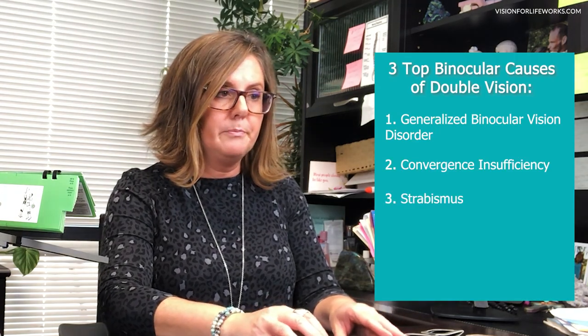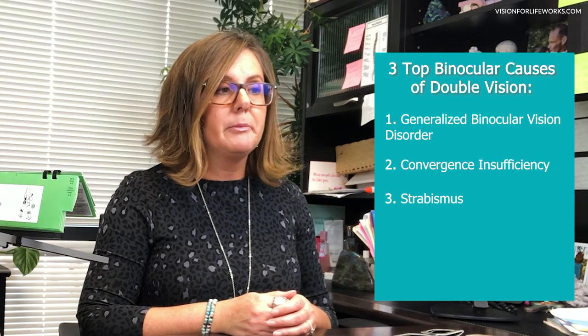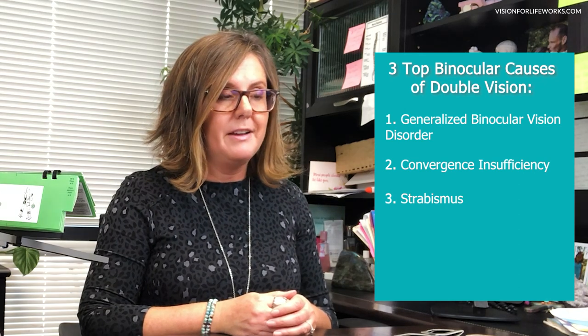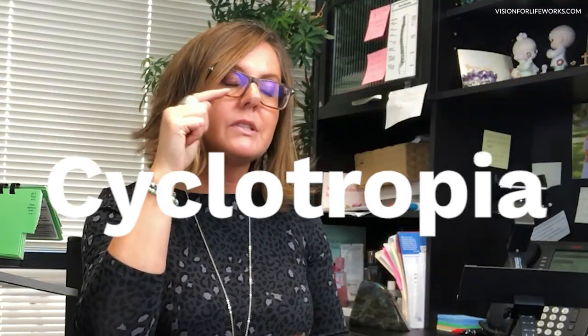A third binocular vision condition that may cause double vision is strabismus, where the eye is turning. An eye turn can occur either in — which is esotropia — out, which is exotropia, and in the up or down position, which could be hyper- or hypotropia, and also at a diagonal — cyclotropia. Any of those forms of strabismus could potentially cause you to see double vision.